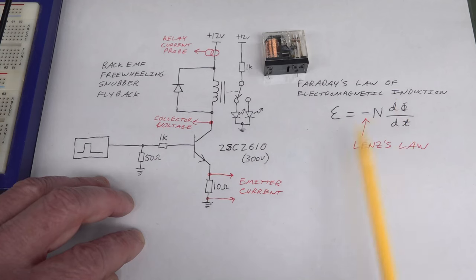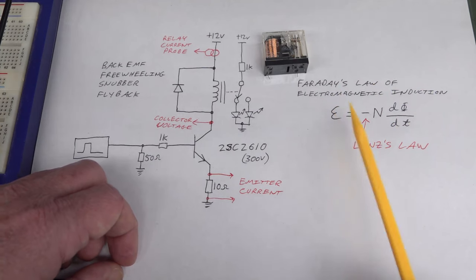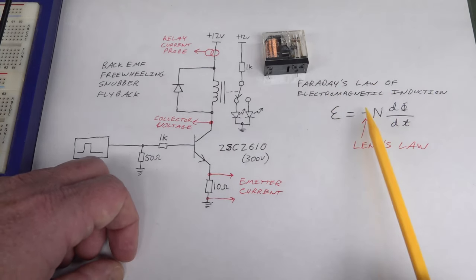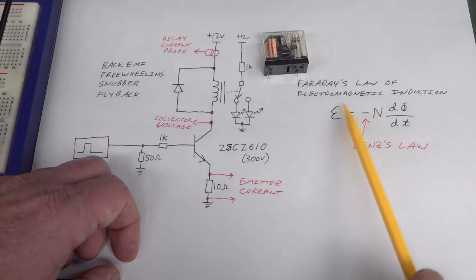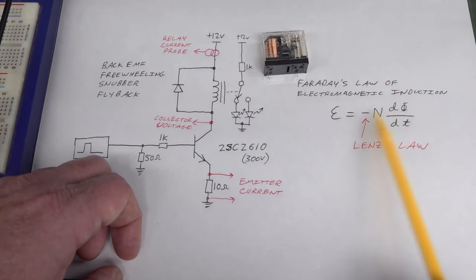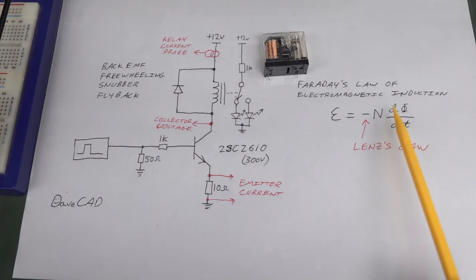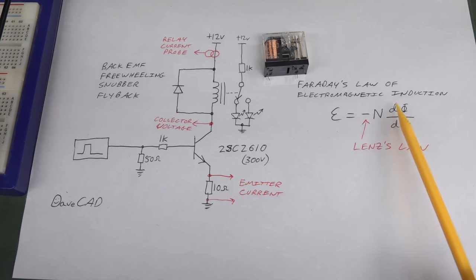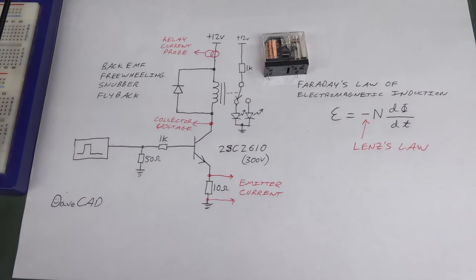A similar trap is involved because of Faraday's law of electromagnetic induction. Basically E, the electromotive force — essentially the voltage — is minus N times dφ/dt. N is just the number of turns. dφ/dt is simply the change in magnetic flux over time — that's all it is, in Webers per second.